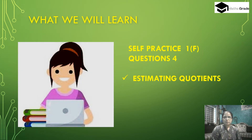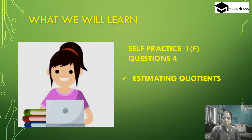Today we will learn and solve self practice exercise questions 1F, questions 1 to 5. The chapter name is 'Knowing Our Numbers' and the topics are estimating sum, estimating difference, estimating product, and estimating quotients. Let's have some questions.